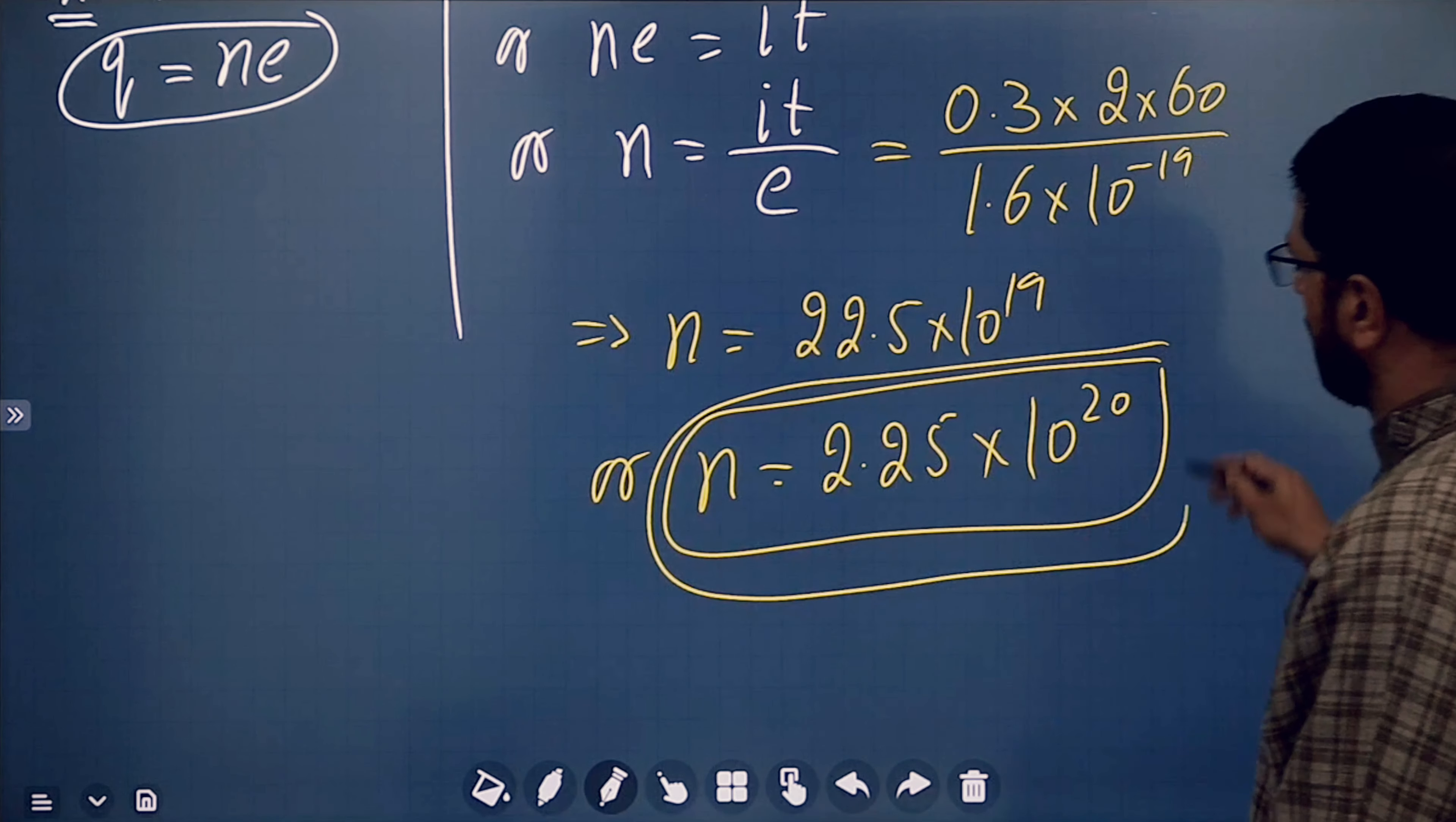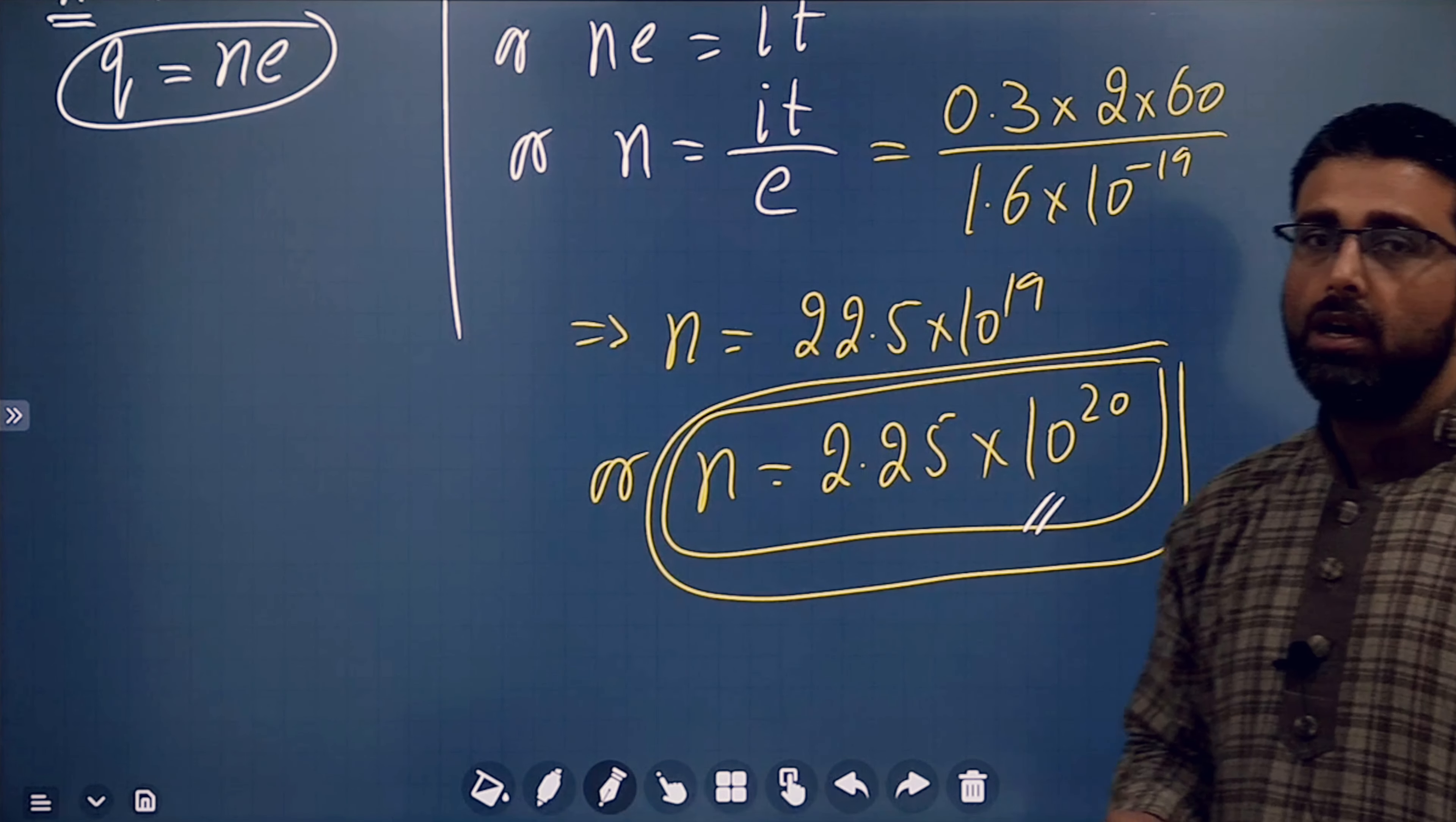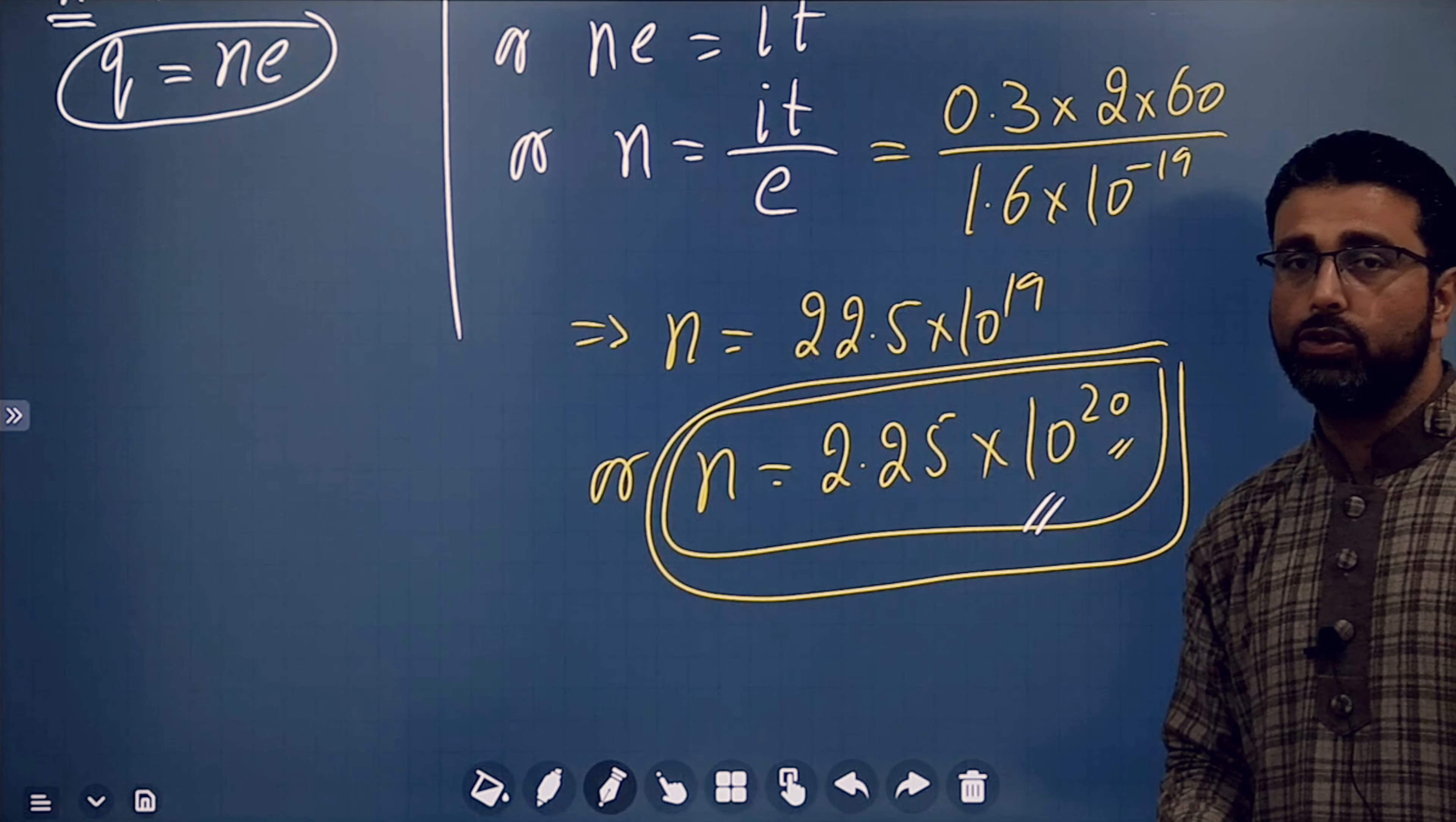So this is the number of electrons passing through your chest, flowing through your chest. If current of 0.3 amperes flows through your chest for a time of 2 minutes, then 10 to the power 20 is huge, really huge.